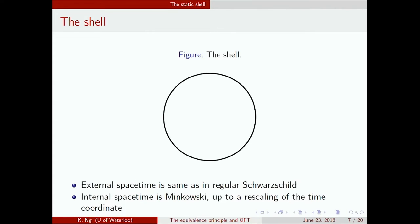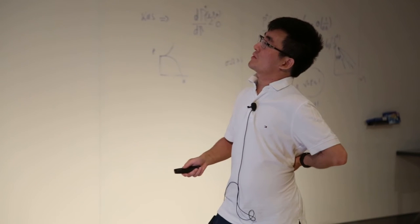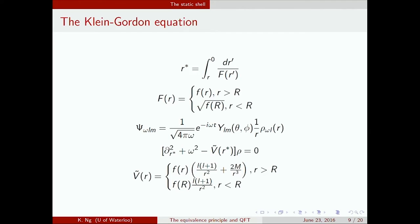The shell: it's not entirely trivial. The external space-time is the same as regular Schwarzschild. The internal space-time is Minkowski—flat, up to a rescaling of the time coordinate. The metric looks like this. We have Schwarzschild outside and flat inside, and there's a bit of matching involved but it's not too difficult.